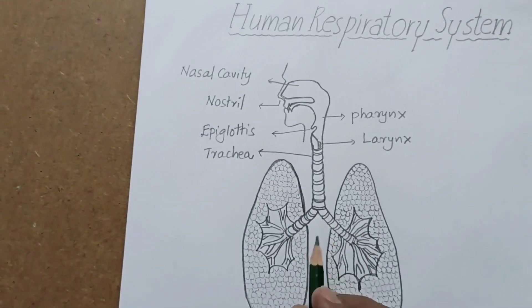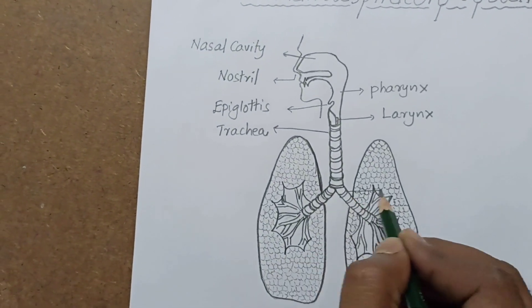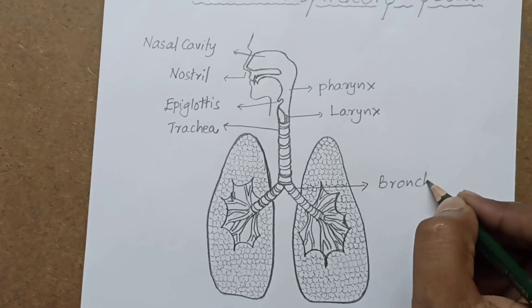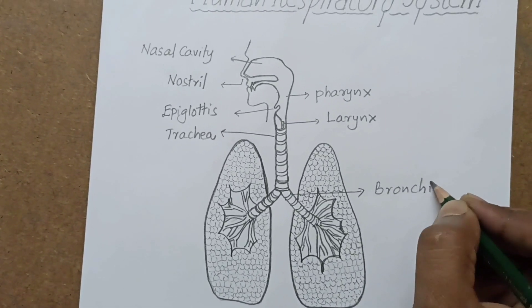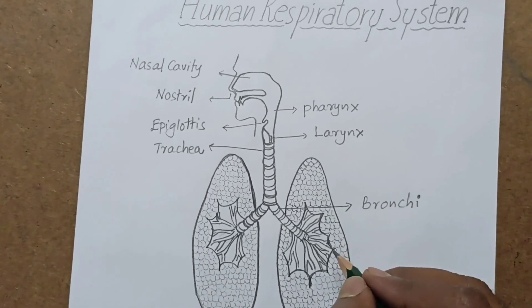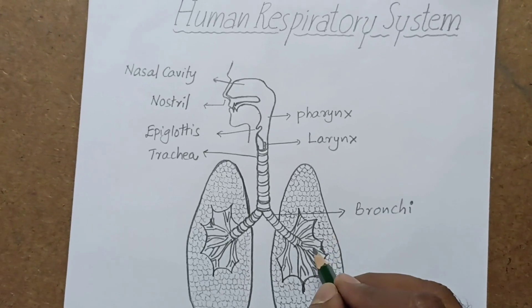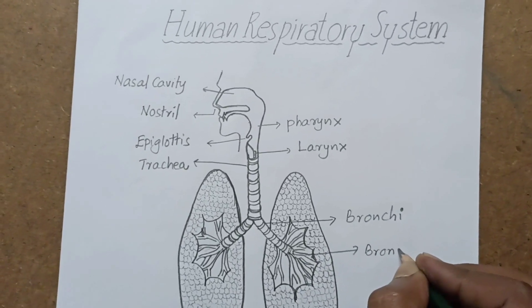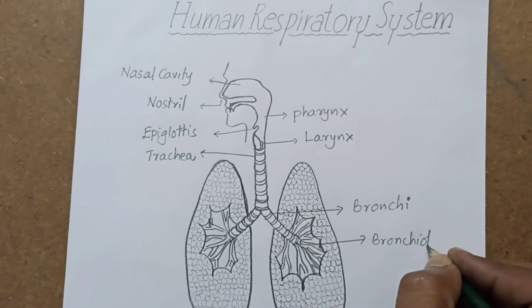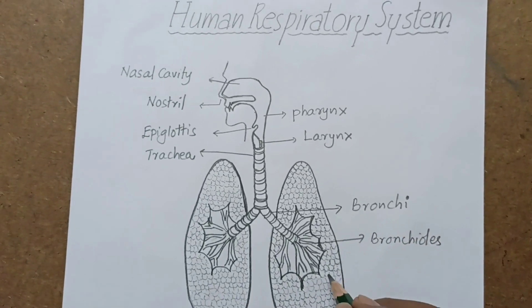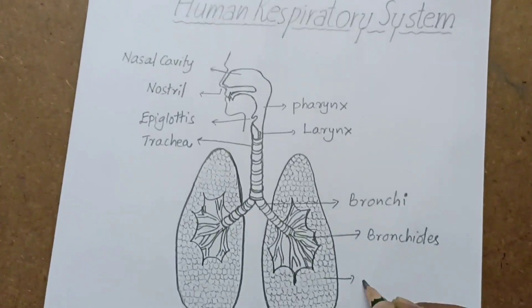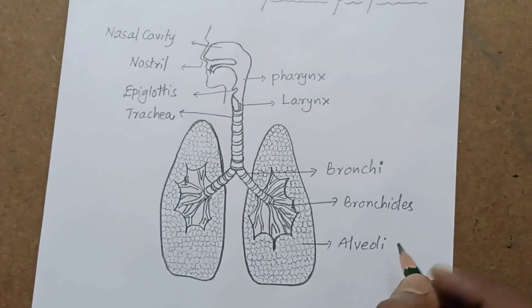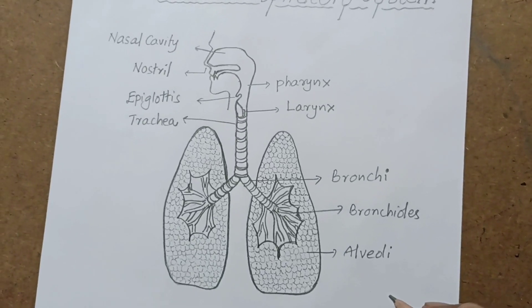These are bronchi. Bronchi divide into different bronchioles — these are bronchioles. Then alveoli, and these are the lungs.